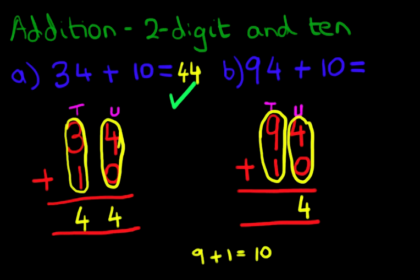Now how do we write that down? We put 1 here, and we put 0 here. This 1 is now part of a new column. Do you know what that column is called? That's right, it is the hundreds column.